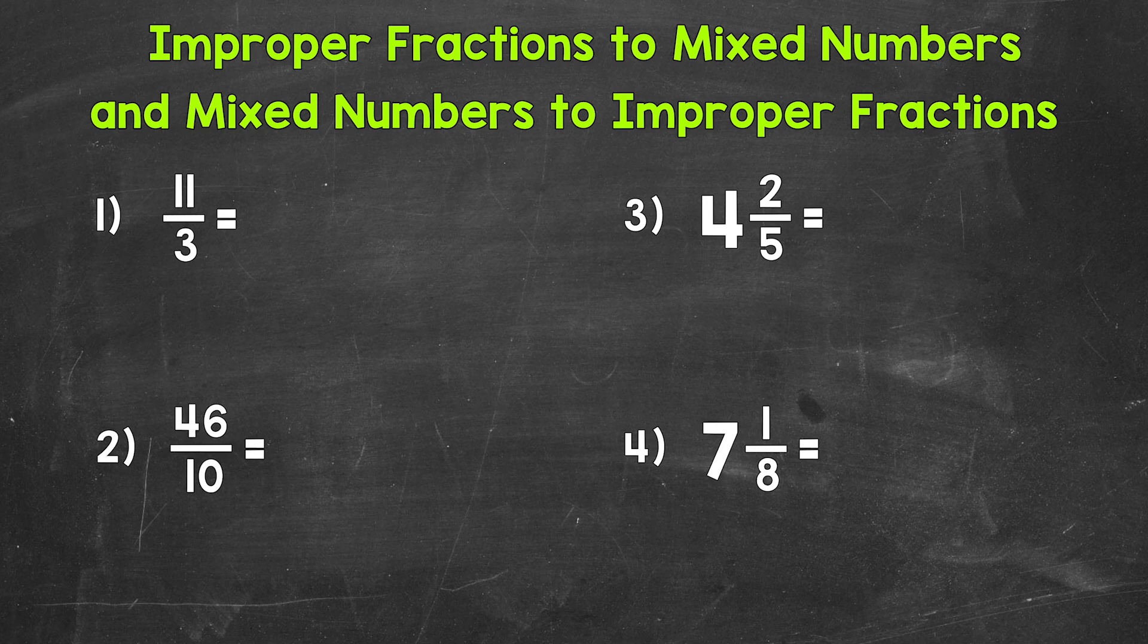Let's jump into our examples, starting with number 1, where we have 11 thirds. This is an improper fraction. The numerator, the top number, is greater than the denominator, the bottom number. This means we have a value greater than one whole.